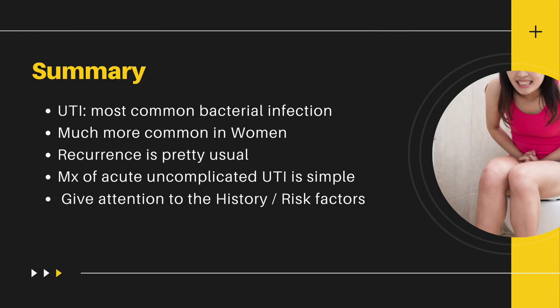To summarize: urinary tract infections are the most common bacterial infection in the human body, much more common in women than men owing to anatomy, and recurrences are common. Management of acute uncomplicated UTI is straightforward, but it is very important to give attention to history and risk factors in order to prevent further recurrences. This is the minimal basic requirement that all practitioners looking after women's health must know about urinary tract infections.